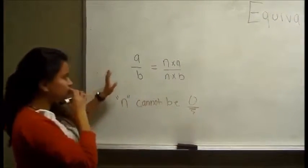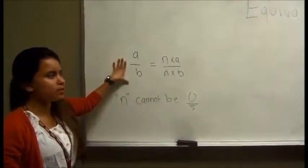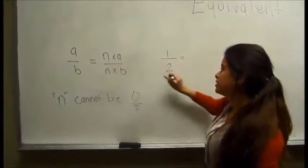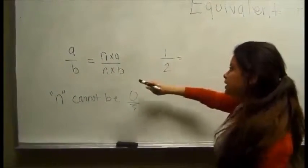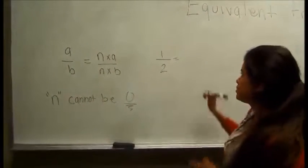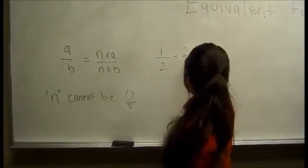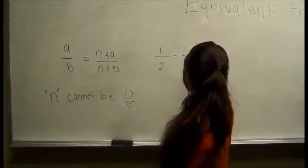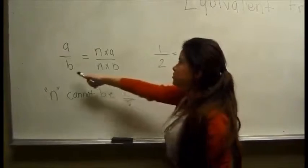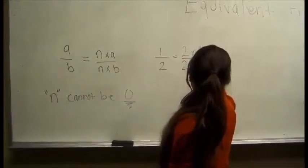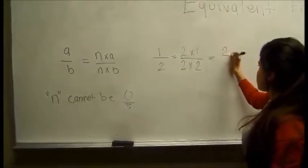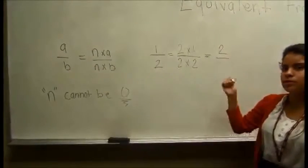Let's plug in numbers into these letters. We are going to use 1 for a and 2 for b. n can be any number except for zero, so let's use the number two. 2 times 1 is your a, and then 2 times 2, which is your b. And what is that going to give you? 2 times 1 is 2, and 2 times 2 is 4.